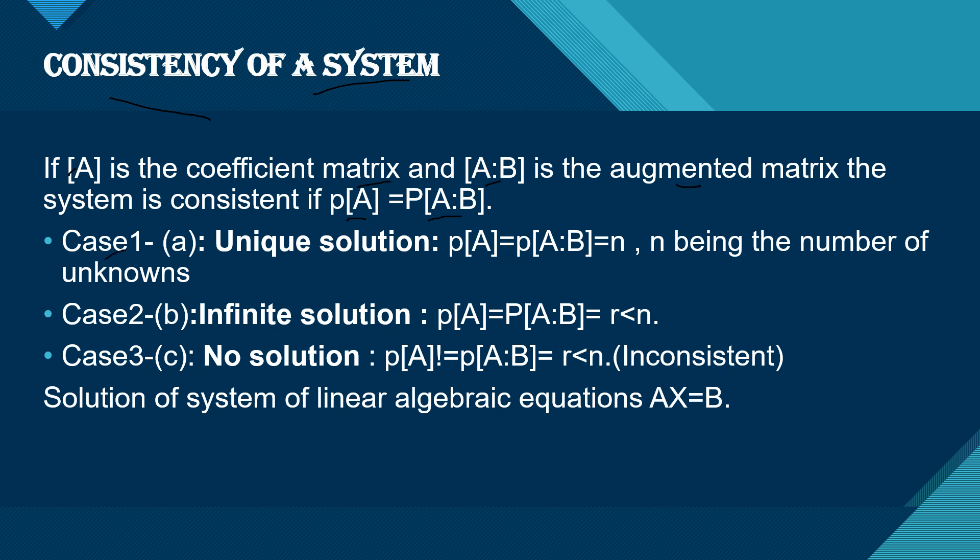Case 1: Unique solution. If ρ(A) = ρ[A|B] = n, where n is the number of unknowns, then the system has a unique solution.